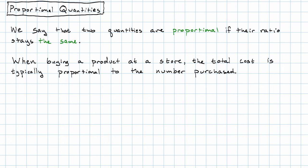When buying a product at a store, the total cost is typically proportional to the number purchased. So that means if we write down the ratio, total cost over number purchased, that will stay the same no matter how many you buy.